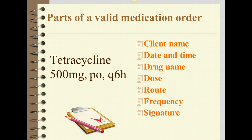Now we're looking at the parts of a valid medication order, which requires the patient's name, the date and time, the drug name, the dose, the route, frequency, and signature. The order shown here essentially says: give tetracycline 500 milligrams by mouth every six hours. You need an order to give a medication to a patient. Orders can be standing — continuous until the doctor cancels it; PRN — as needed; a single one-time order, such as a pre-op or pre-procedure medication; STAT — which means immediately; NOW — which is urgent but not STAT; and prescriptions, which are in the home environment.